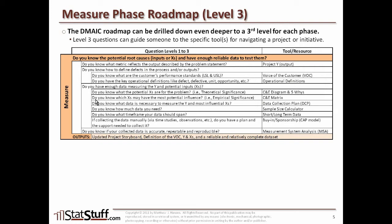Once we've identified the potential x's, we move on to the next question: do you know which of those x's may have the most potential influence — exploring the empirical level of significance, the level that's experiential and observable? That might call for the C and E matrix to identify what we suspect could be the most critical potential root causes. The cause and effect matrix can get us down to that level in answering that question.